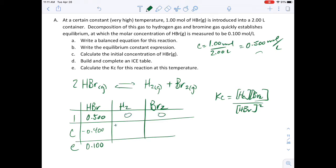So this is going to be plus 0.200 mole per liter, and the same thing is going to happen with bromine. So I'm going to get 0.200 mole per liter.